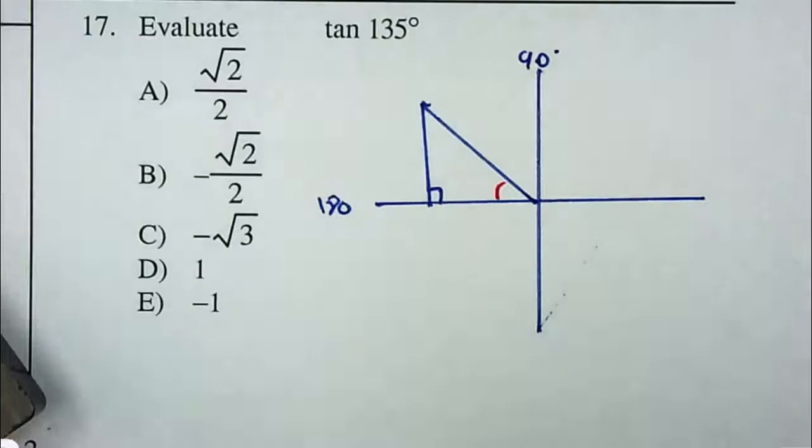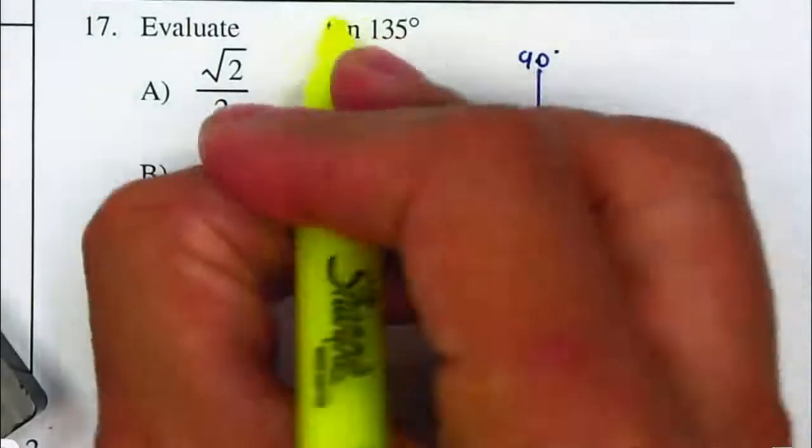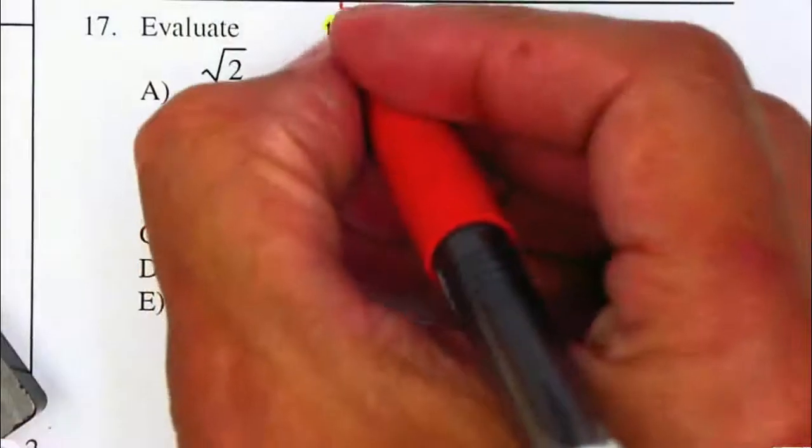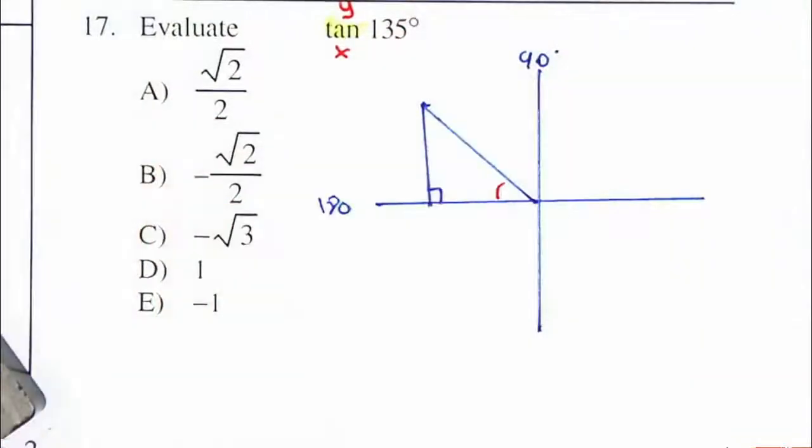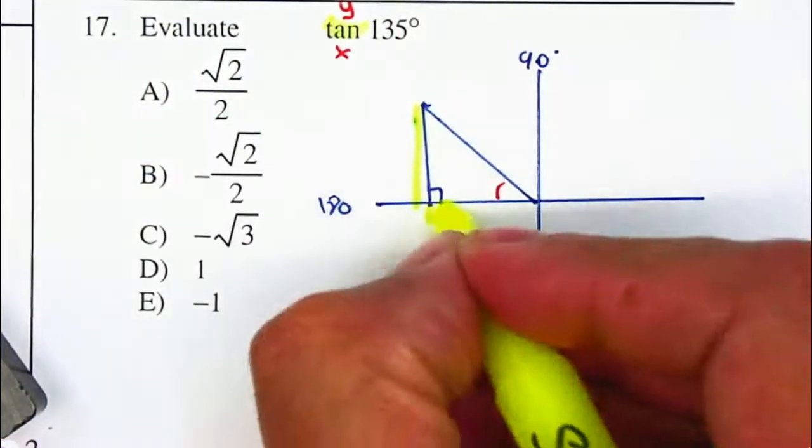I need to remember that my tangent is my y over my x. This is my y value and this is my x value.